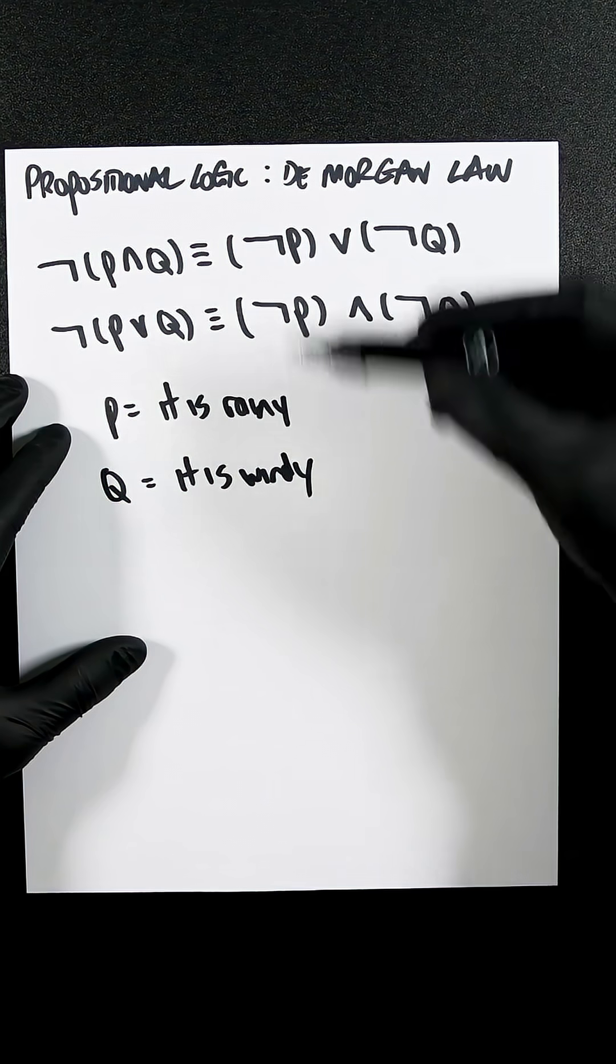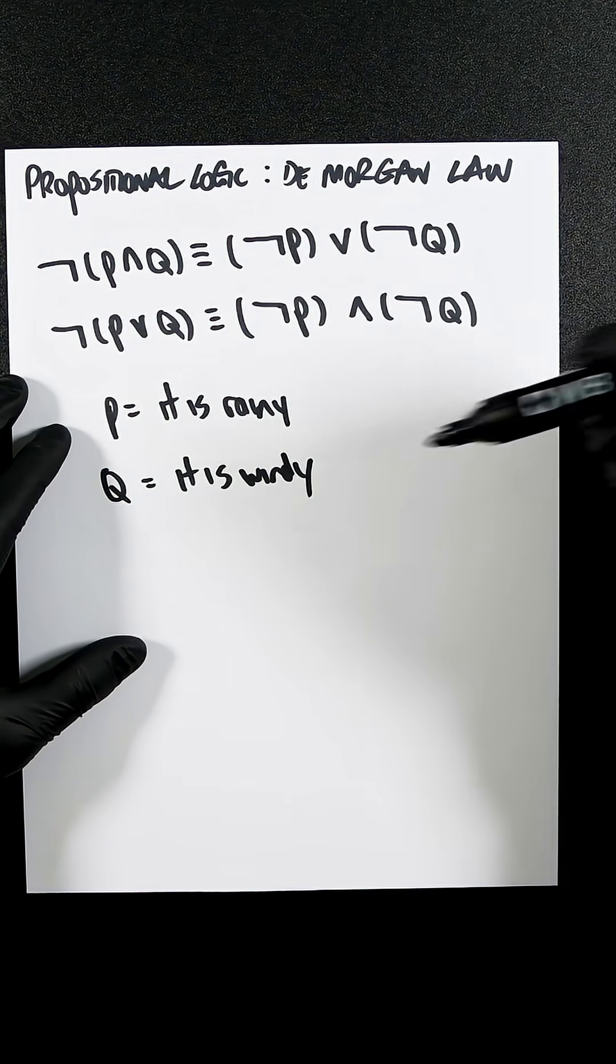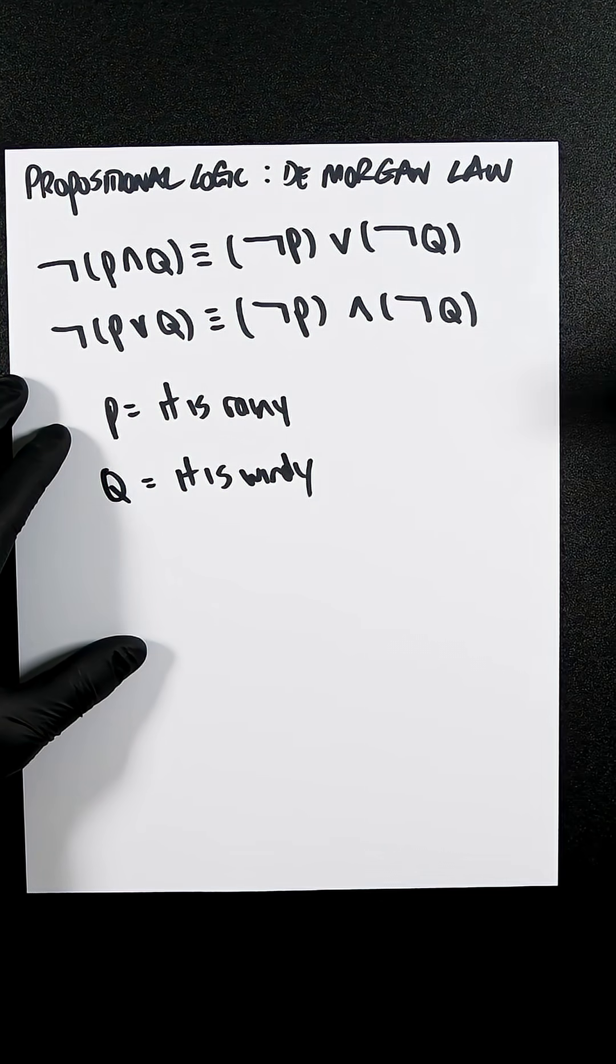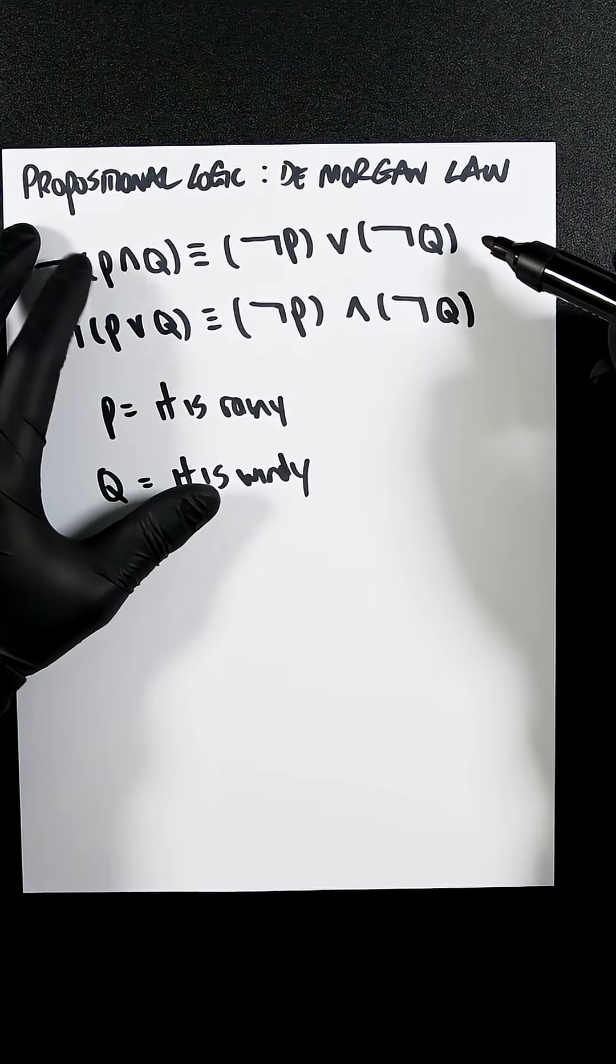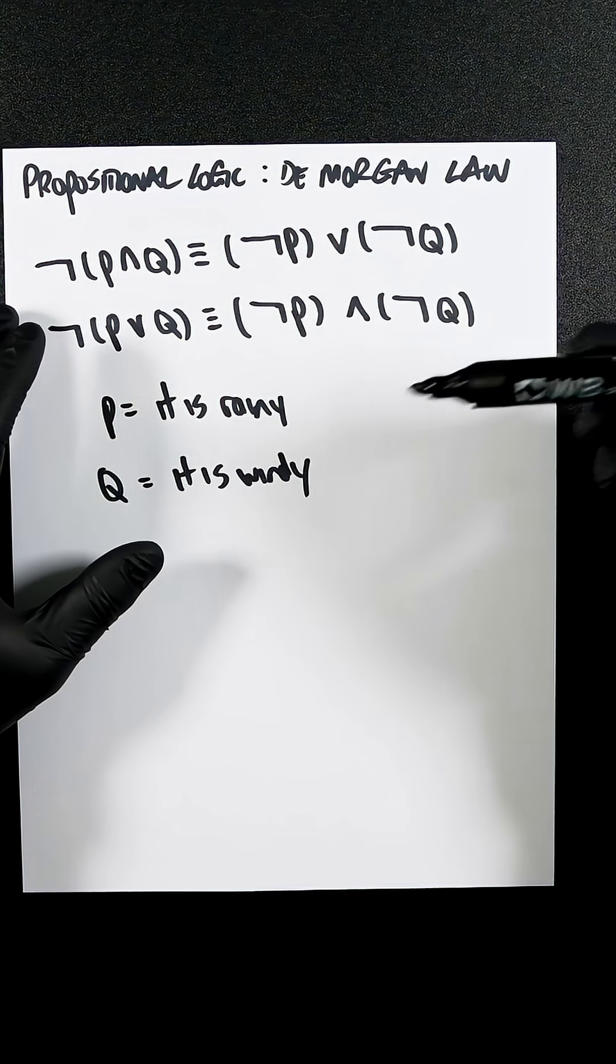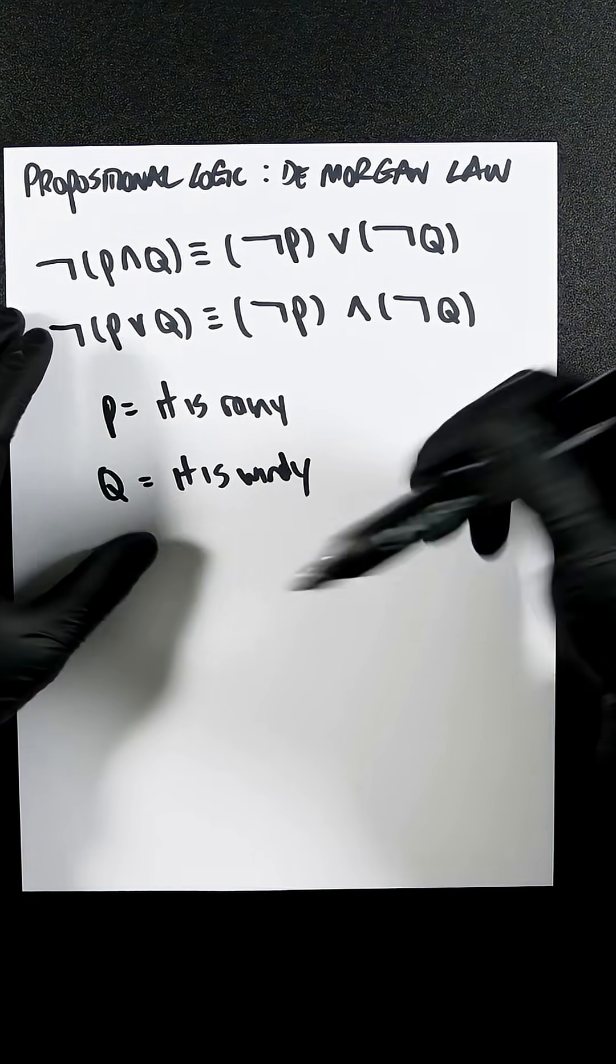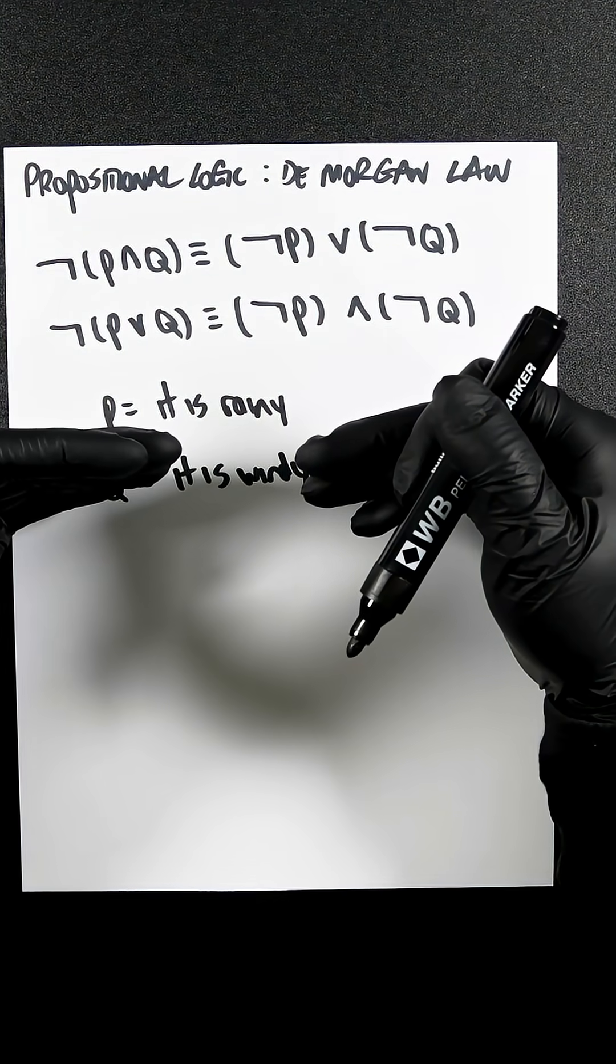If we now apply these, it's not true that it's raining and windy. Or, either it's not raining or it's not windy. Those are exactly the same sentences.